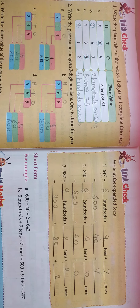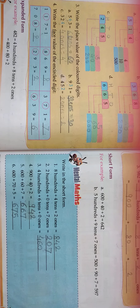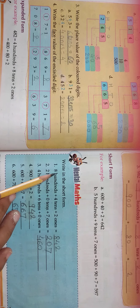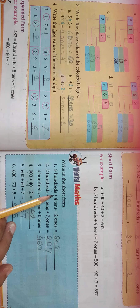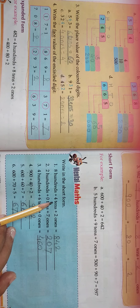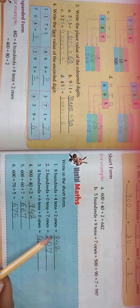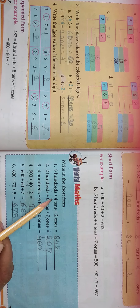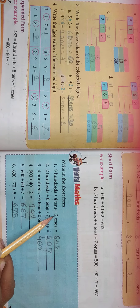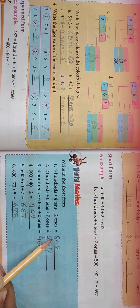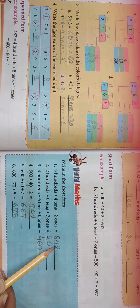Now the next: write in short forms. See, 800 + 4 tens + 2 ones. The number is 842.